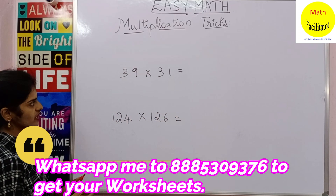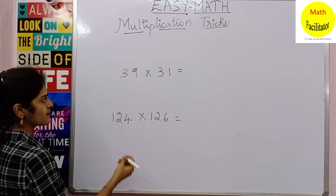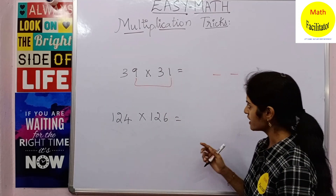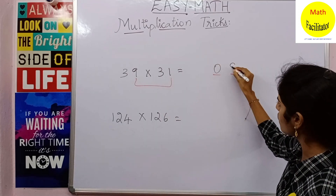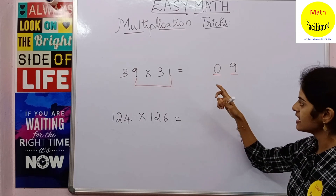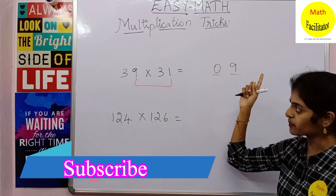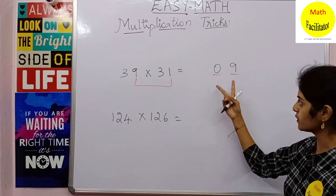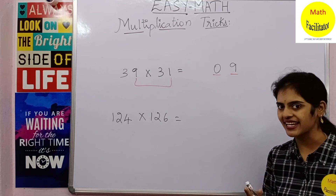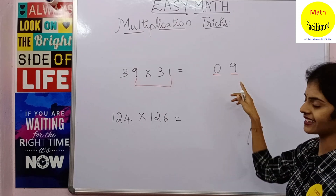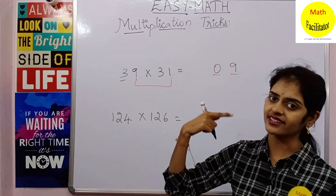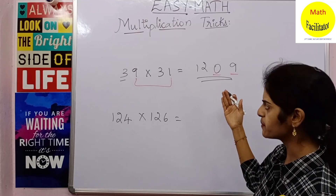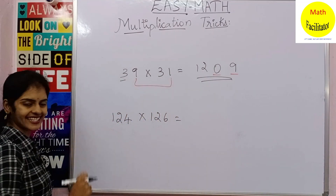Let us move to the next example: 39 times 31. By multiplying the units digits you get the last two digits — 9 times 1 is 9. But since we want two digits, we write it as 09. We write 9 as 09 because the answer needs two digits in the units position, and 9 alone cannot fill two digits — but 9 and 09 are the same value. Then multiply 3 by the next number after 3, which is 4: 3 times 4 is 12. So the answer is 1209.